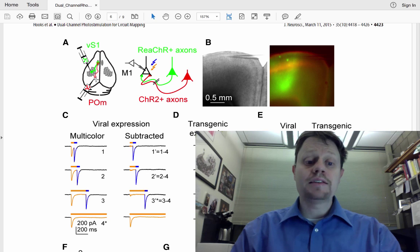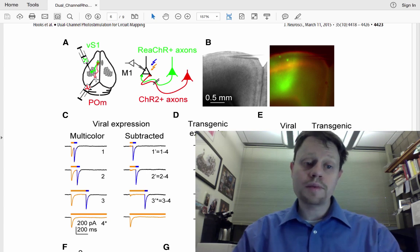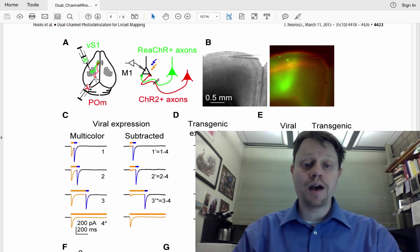They find that some neurons that they record from receive input only from somatosensory cortex, that is some motor cortex neurons only have somatosensory cortex input, other motor neurons only get input from the thalamus, other motor neurons don't seem to get input from either, and other motor neurons get convergent input from both.